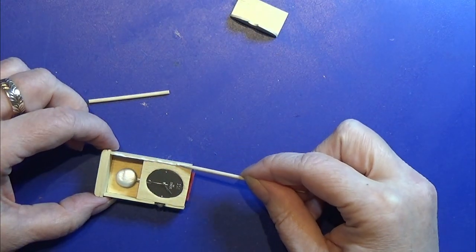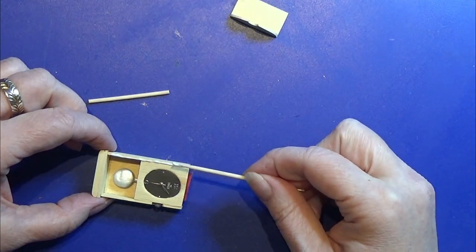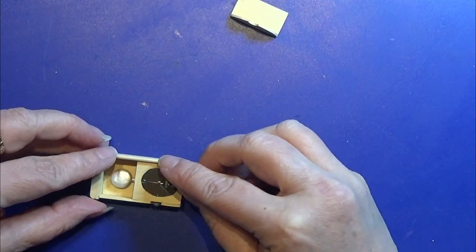Then I'm going to glue these decorative toothpicks to the side of the wall clock like you see me do here.